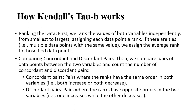Discordant pairs are pairs where the ranks have opposite orders in the two variables — for example, one increases while the other decreases.